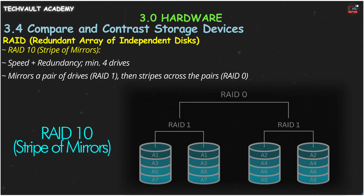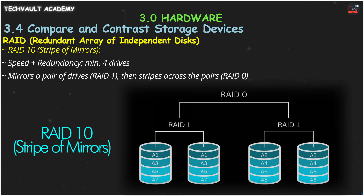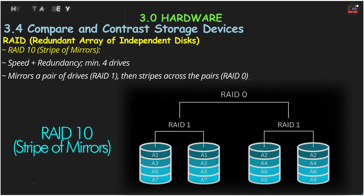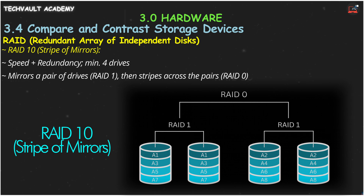And RAID 10, a stripe of mirrors, is the best of both worlds. It mirrors drives into pairs for safety (RAID 1), and then stripes data across those pairs for speed (RAID 0). It requires at least four drives and offers great performance and redundancy, but like RAID 1, it uses half your storage space for the mirror.